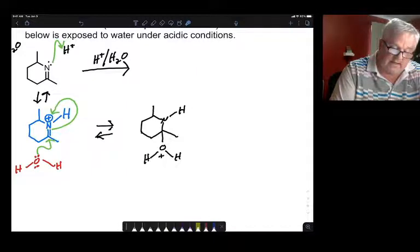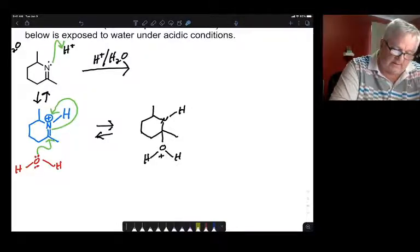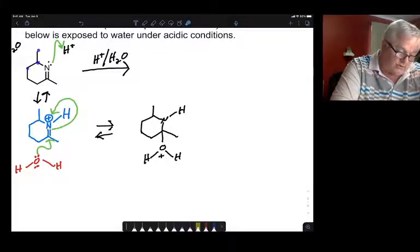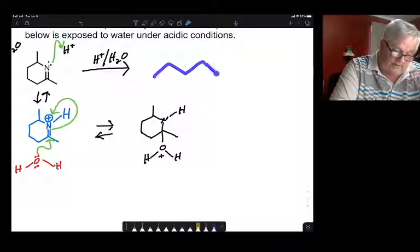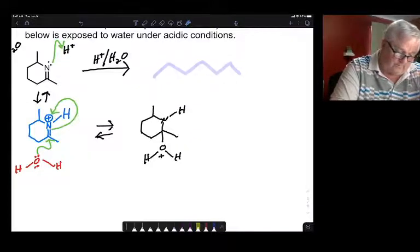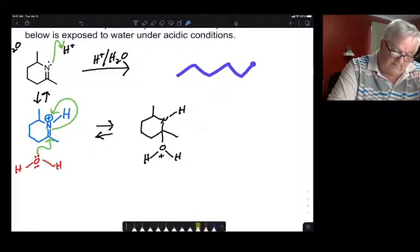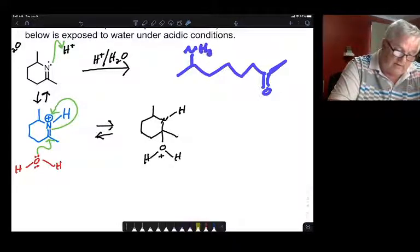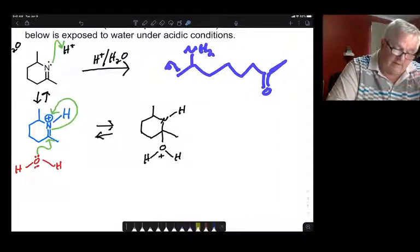The final product is an amino ketone. I'll even draw you here the final product with my laser so that it disappears, but we have one, two, three, four, five, six. We're going to have a six-membered ring. That's going to be a ketone, and that ketone is going to have a methyl group on it, and we're going to have an NH2 there. That is going to be our final product.